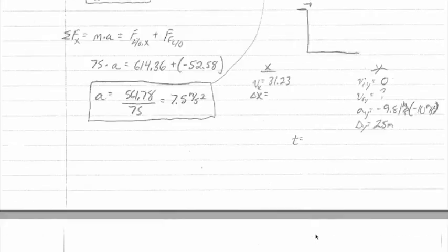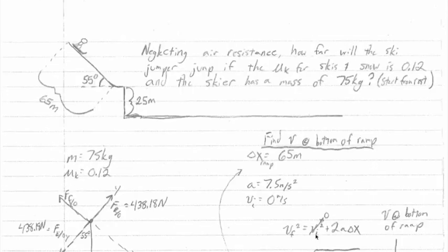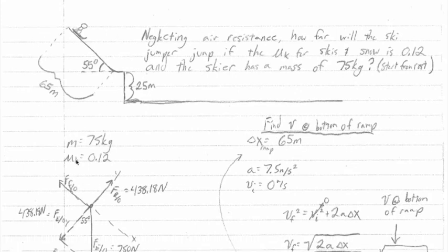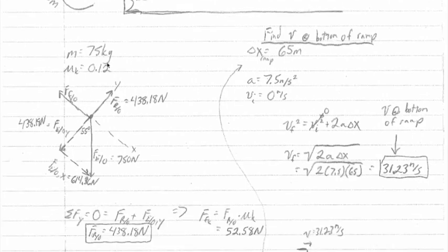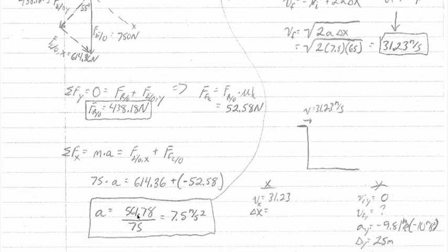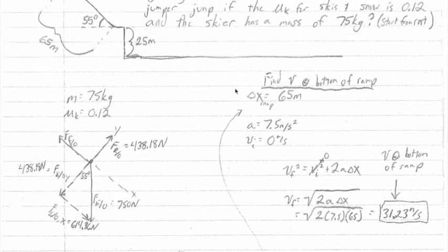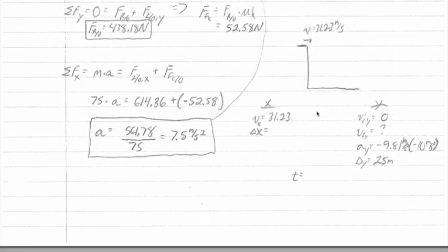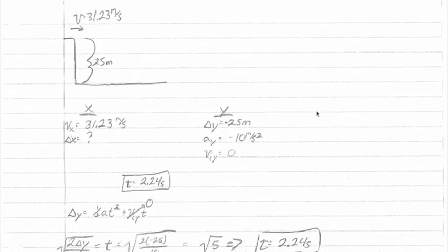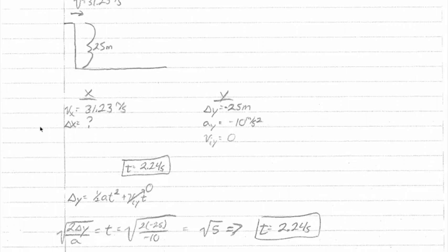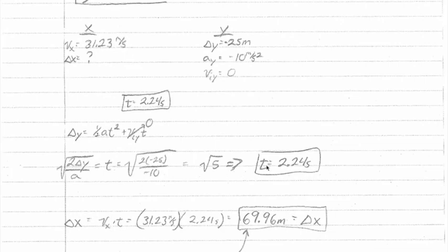So to run through this very quickly in summary, given this physical information about the problem (the mass of the skier and mu sub k), we're able to use force analysis to find the skier's acceleration while on the ramp. We're able to use that acceleration to then find out the skier's final velocity right before he leaves the ramp. That's what we did in this section. And then take that velocity and do a projectile motion problem, setting up our variable table for x and y variables to find the time the skier is in the air and ultimately his horizontal displacement.